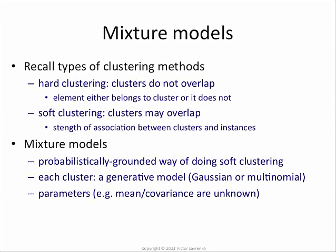In mixture models — specifically Gaussian mixtures, which we're going to cover — each cluster corresponds to a generative model, a probability distribution. That's typically a Gaussian or a multinomial, and we'll run through a Gaussian example because we're looking at real values. Each cluster corresponds to a probability distribution, and what you want to discover as part of the EM algorithm are the parameters of that distribution — the mean and covariance of each Gaussian, or for a multinomial, the probabilities for each outcome of the random variable.